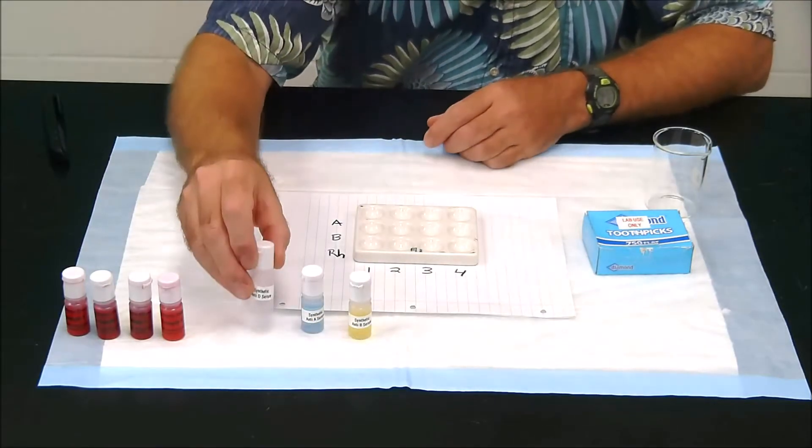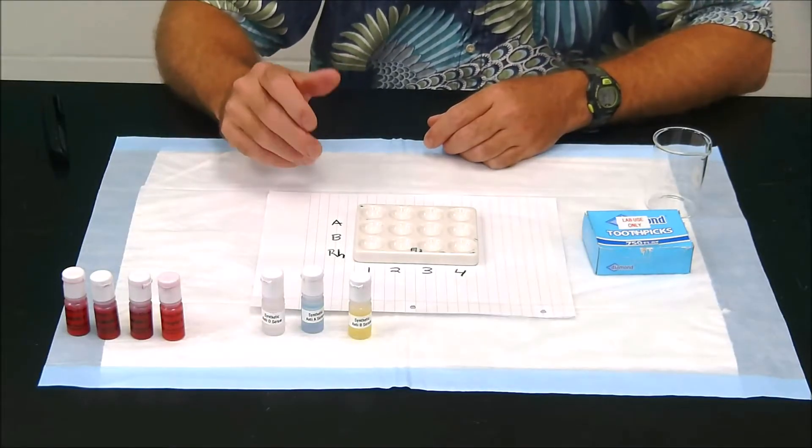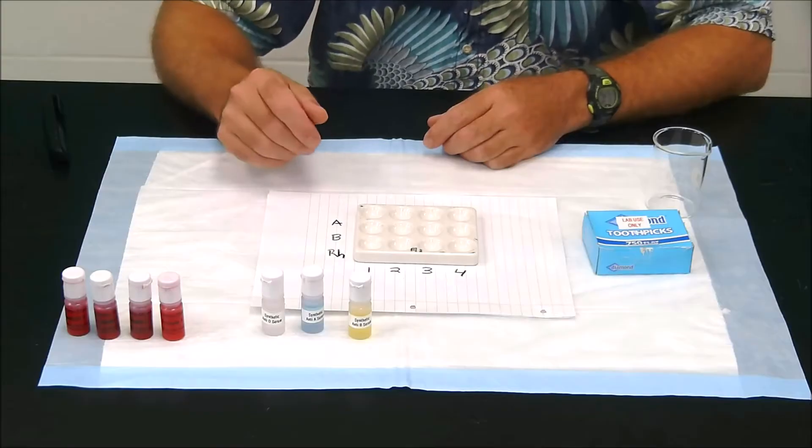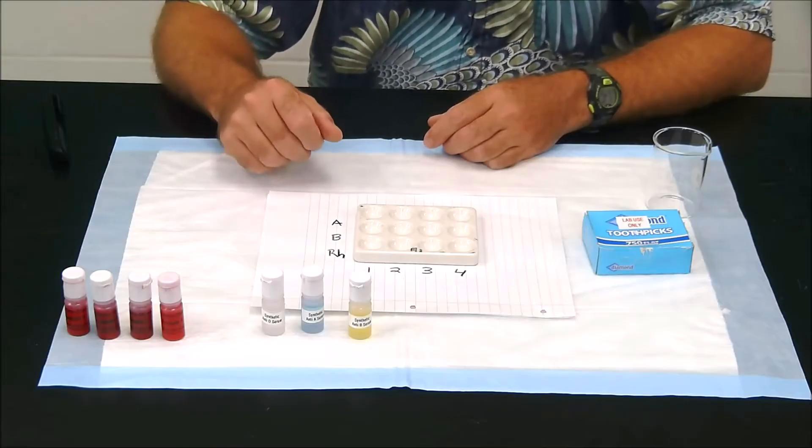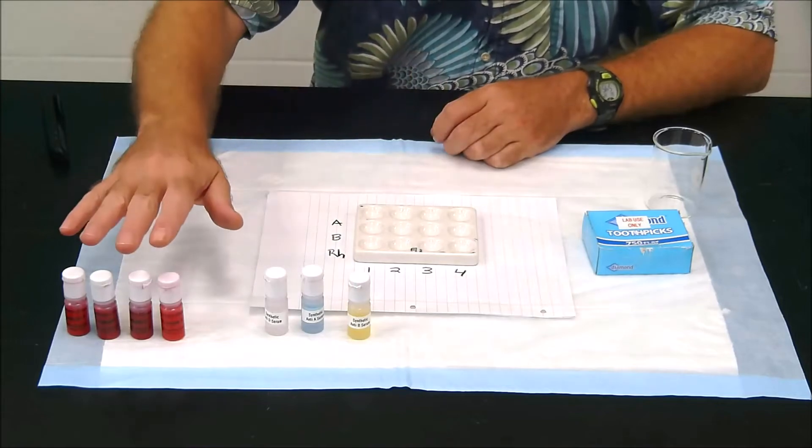Remember, the blood types that are most common are ABO, and then we have Rh positive or negative. So using these anti-sera will help us to determine the blood types of our mystery blood over here.